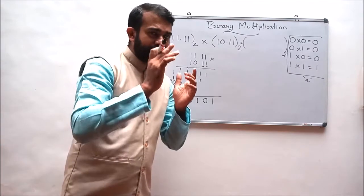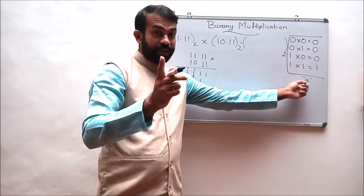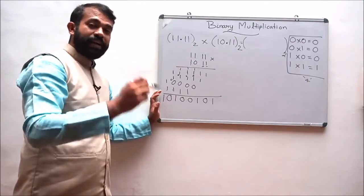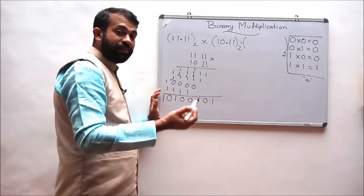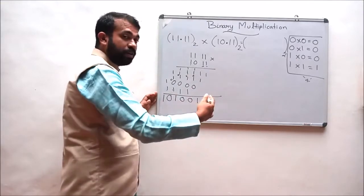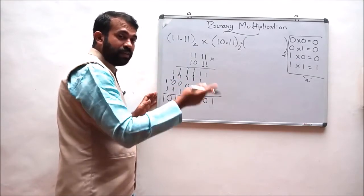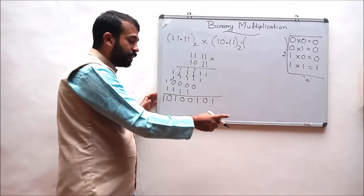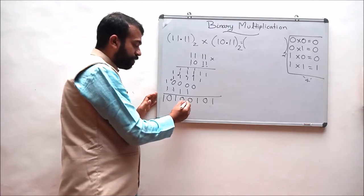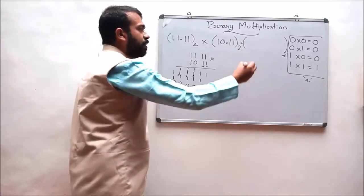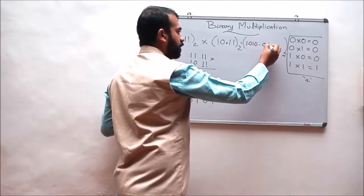While considering the final answer, let us account for the four floating points. For finding the final answer, let us count four different positions from the least significant bit (LSB) position — the rightmost position. The floating point should be placed at four positions from the LSB: 1, 2, 3, and 4. So the final answer is 1010.0101.